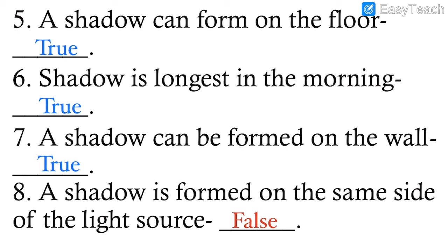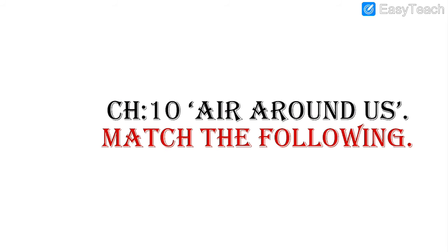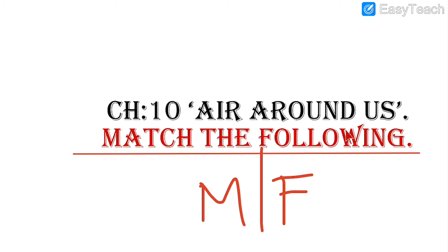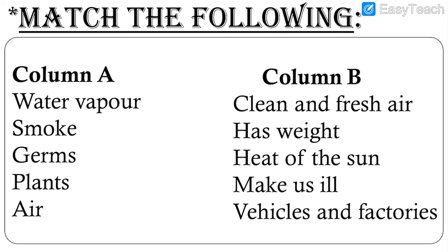Those were eight True or False for chapter 13 Light and Shadow. After True or False, we have Match the Following for chapter 10, Air Around Us. Column A has: water vapor, smoke, germs, plants, air. Column B has: clean and fresh air, has weight, heat of the sun, make us ill, vehicles and factories.